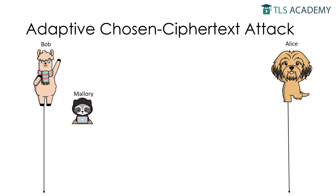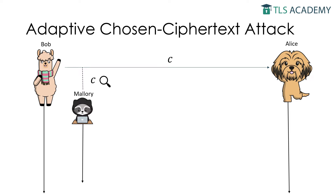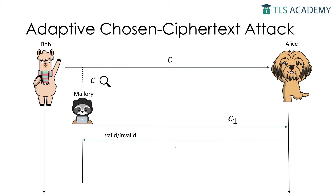Imagine Bob sends a message to Alice and Mallory is the attacker. The ciphertext for the encrypted message M is called C, and Mallory is able to snoop it. In adaptive chosen ciphertext attacks, an adversary wants to decrypt the ciphertext without knowledge of the decryption key. To gradually reveal information about the encrypted messages, Mallory modifies the original ciphertext C into multiple ciphertexts and sends the resulting ciphertexts C1 through Cn to Alice.